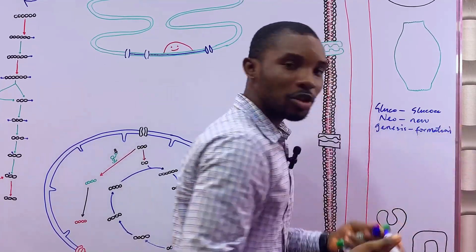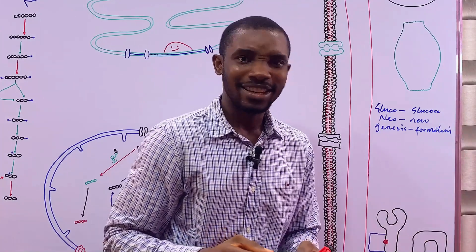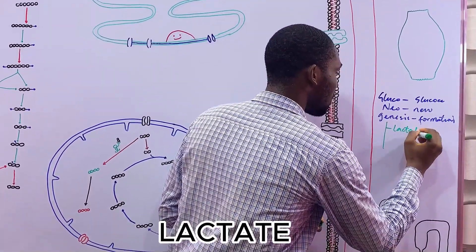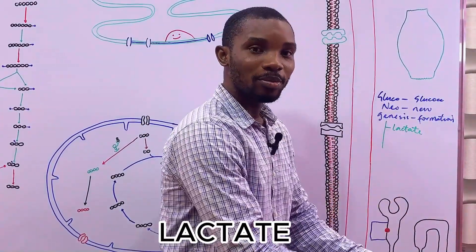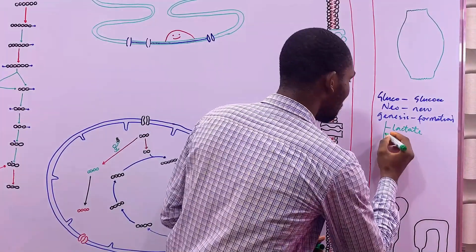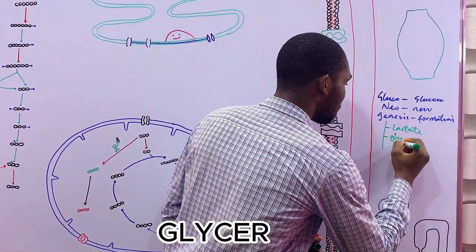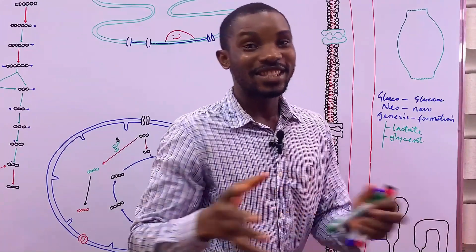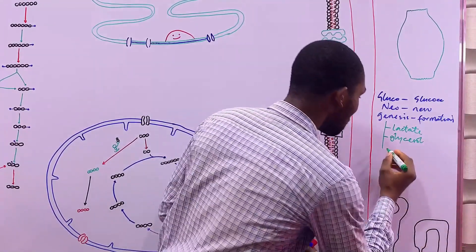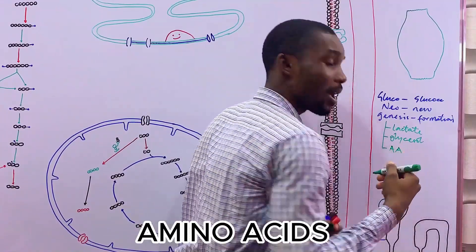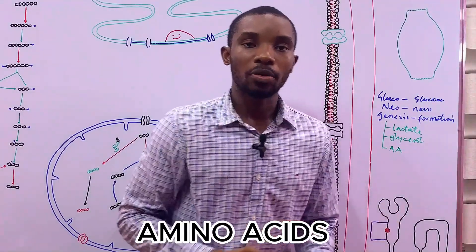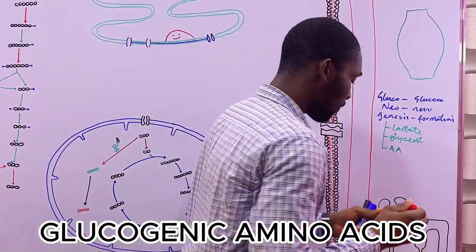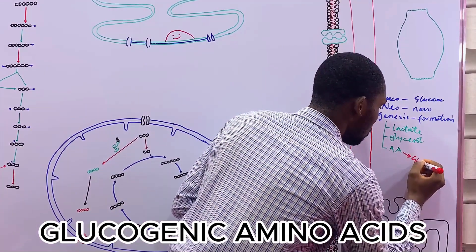So gluconeogenesis is the formation of new glucose molecules from other sources. We can form glucose from lactate — we use blood lactate to form glucose. You can also form it from glycerol; remember glycerol is obtained from the splitting of fats, that's your triglyceride into fatty acids and glycerol. We can also form it from amino acids, but not all amino acids can be used to obtain glucose — only those known as glucogenic amino acids.